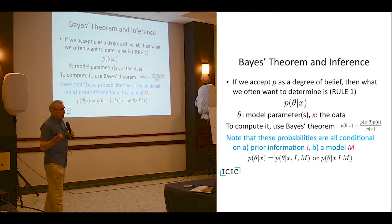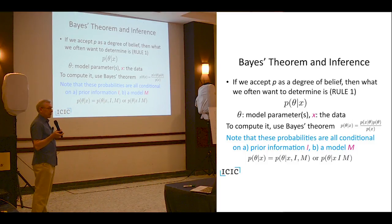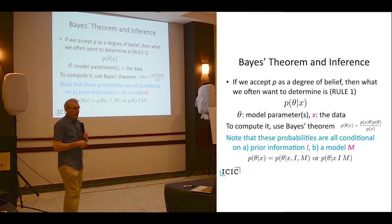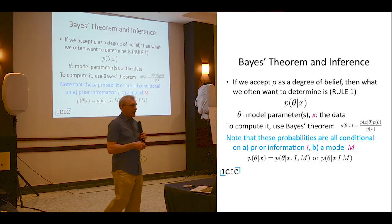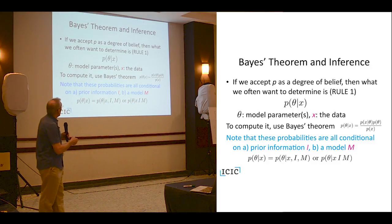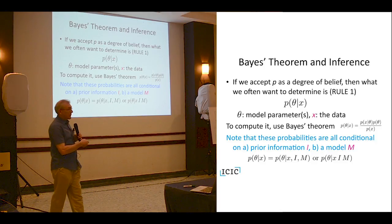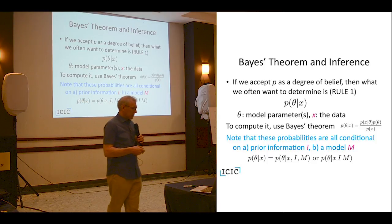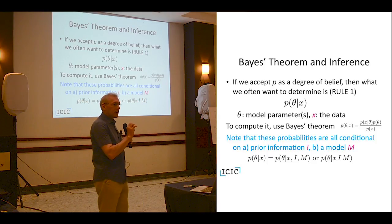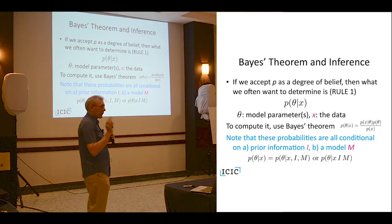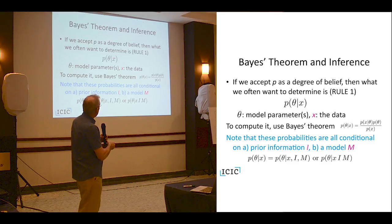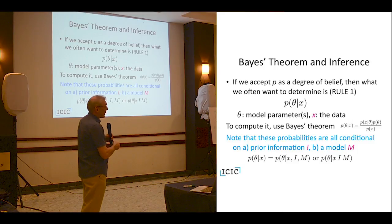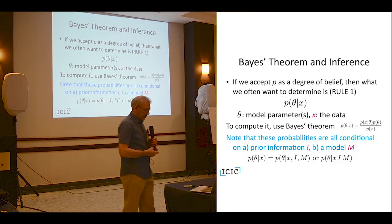The main introduction that Bayesian probability makes in this context is to use Bayes' theorem, making some of the quantities in Bayes' theorem the parameters of the model. Writing down what we would like to get out of an experiment: if theta represents the parameters of the model — omega matter, Hubble constant, or whatever it is — and x the data, then given the data, what is the probability of the parameters of the model?